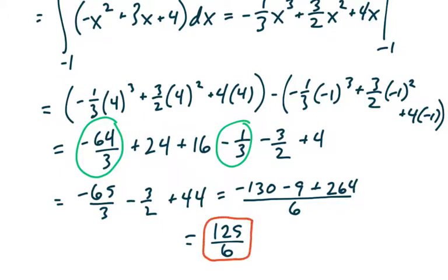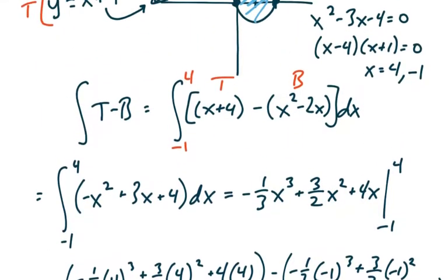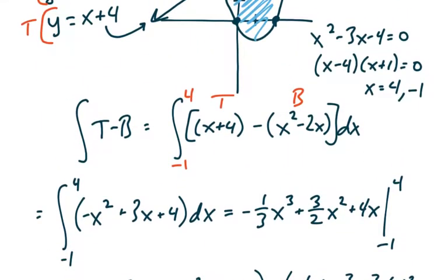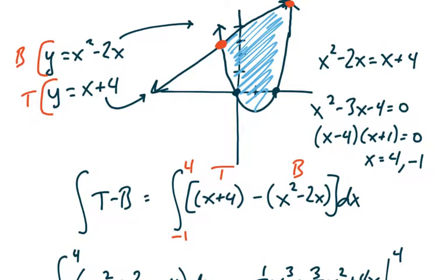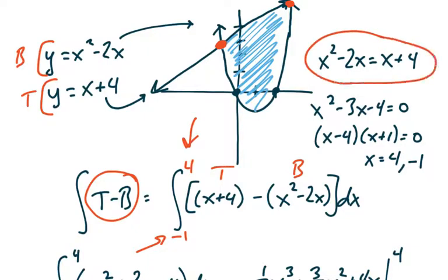Apart from the annoying number-crunching, that's how we do the area between two curves: graph them by hand using your knowledge of parent functions, figure out the top and bottom, and the formula is always top minus the bottom. And it's really important to find where the curves intersect so you can get the limits of your integral — do that by setting the two graphs equal to each other.